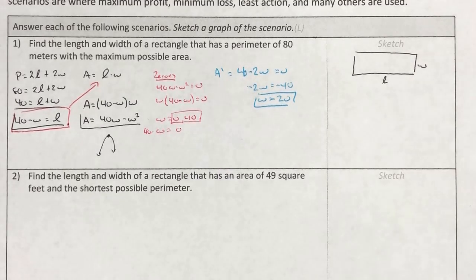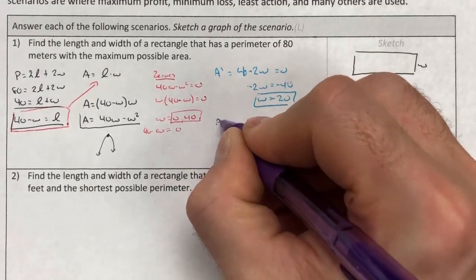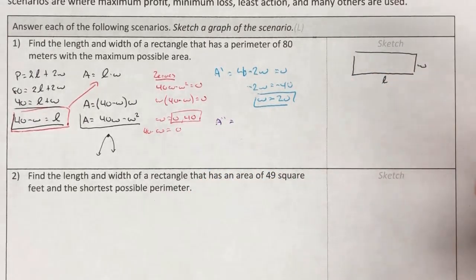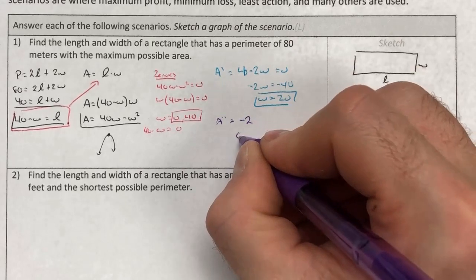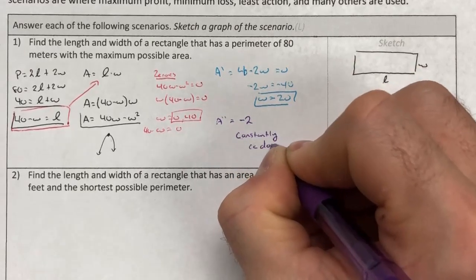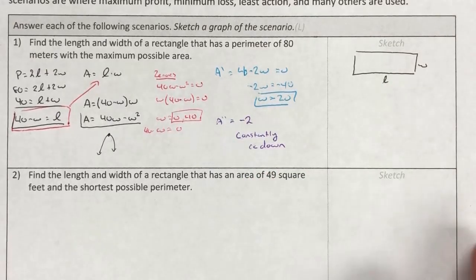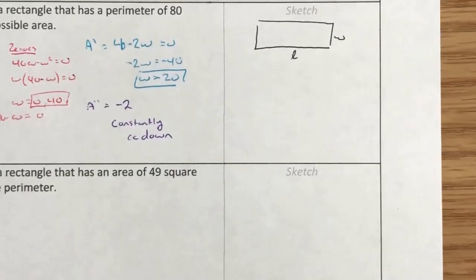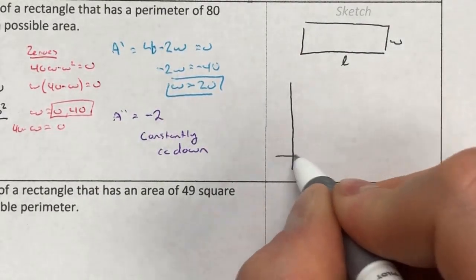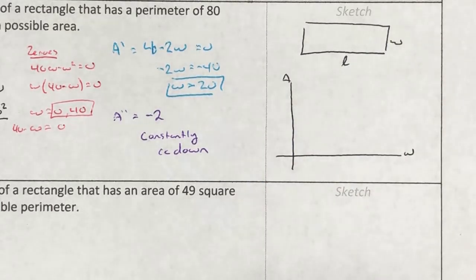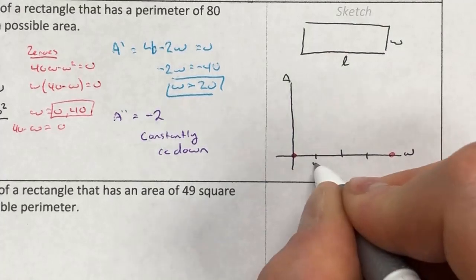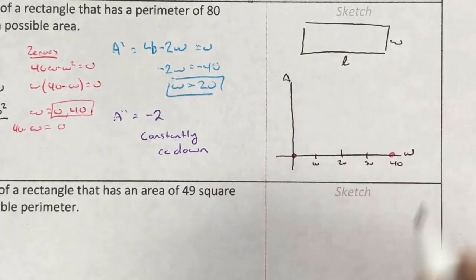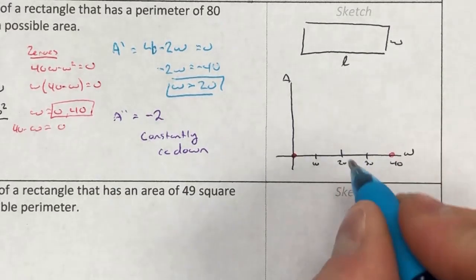To see the full shape, we find the second derivative A″ = −2, which is constantly negative, meaning the graph is concave down the entire time. So the critical point at W = 20 is a maximum. The graph has zeros at W = 0 and W = 40, with this maximum in between.